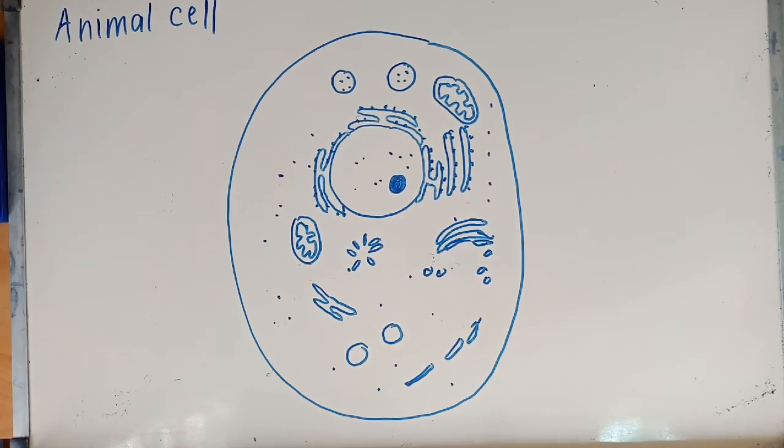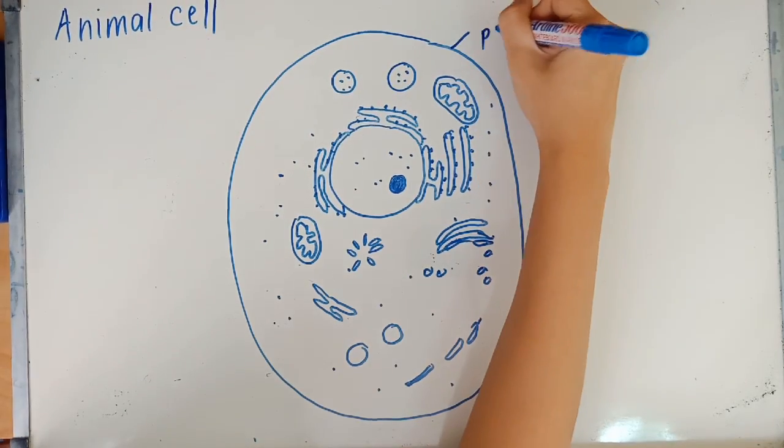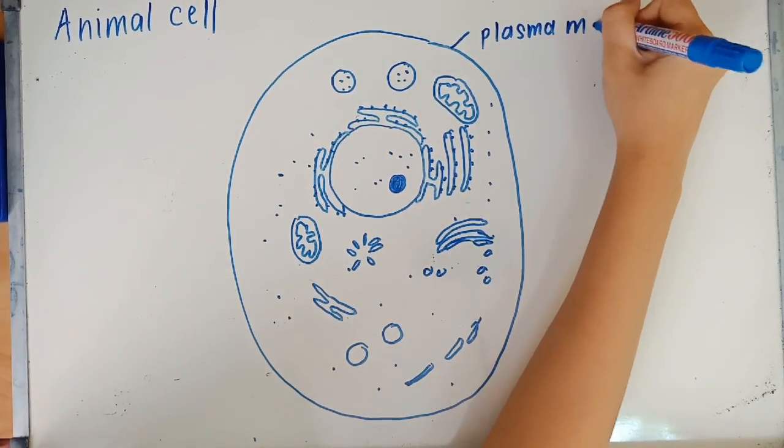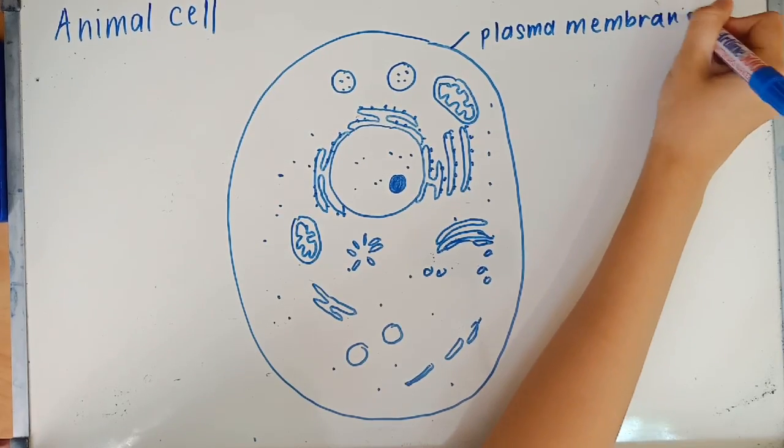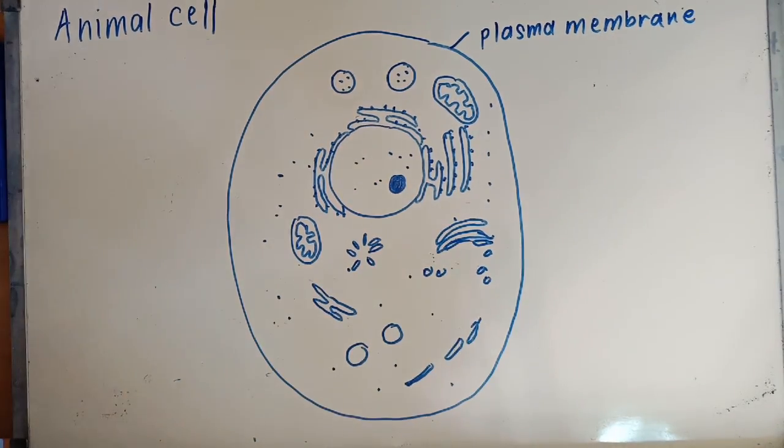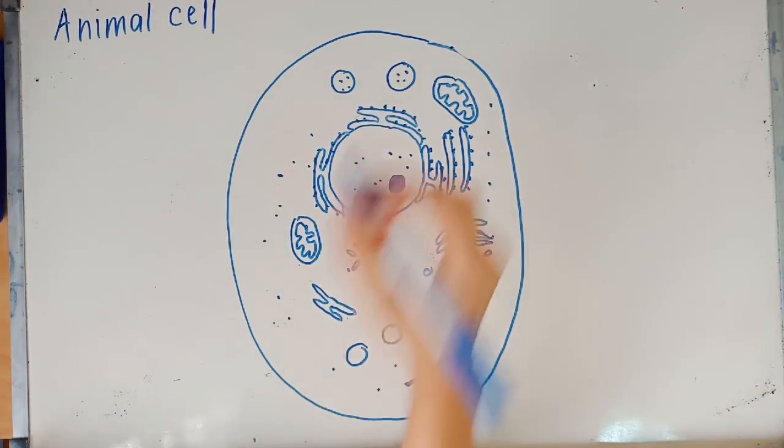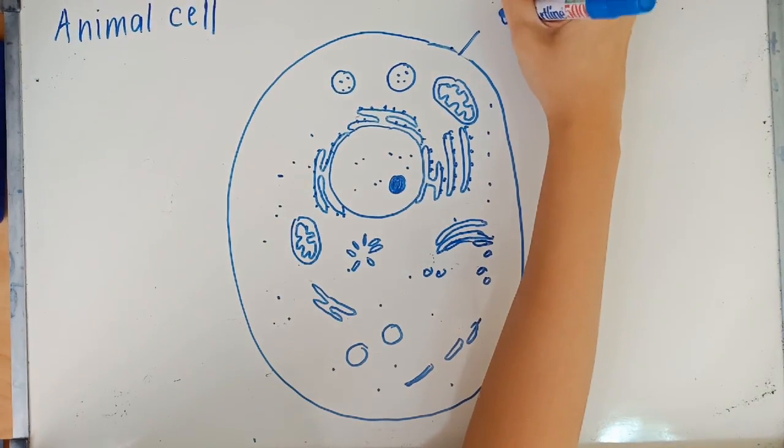So you need to know the organelles that are present in the animal cell, the little structures. Of course you need to know their function. This can be asked in objective and in structure as well.